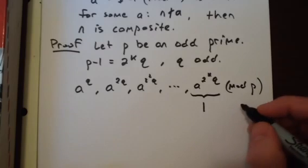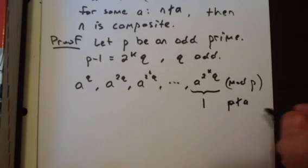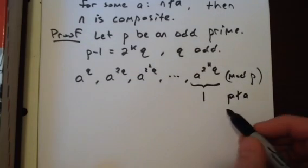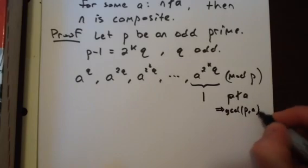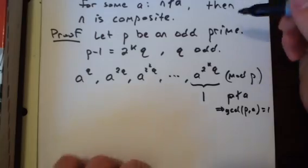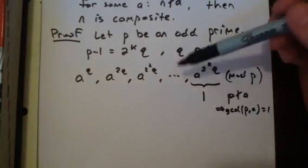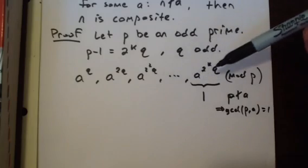And we have that p does not divide a by assumption. Therefore, gcd of p and a is 1. So by Fermat's Little Theorem, this is congruent to 1 mod p. And now notice, every number in this list is the square of the number before it. And the last number is 1.